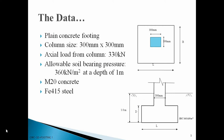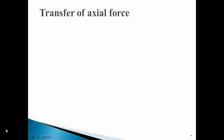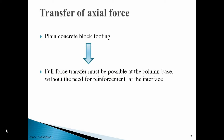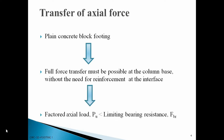We have to find the dimensions — length L, breadth B, and depth D of the footing. Before going to the design, let us understand what a plain concrete footing indicates. It means there is no reinforcement in the footing. Full transfer happens at the column base without the need of any reinforcement at the interface. This is possible when the bearing stress produced by the ultimate load at the column base is less than the maximum bearing stress offered by the footing concrete.